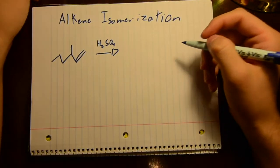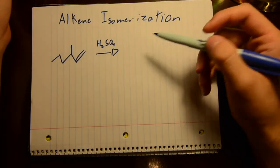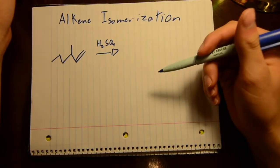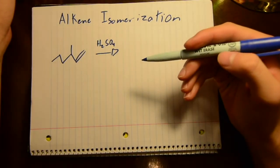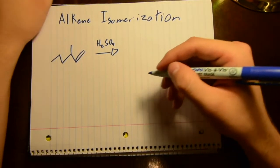Alright, mechanisms! Who doesn't love mechanisms? So this mechanism is called alkene isomerization. Let's get into it.